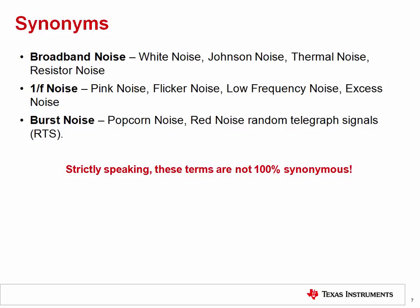As we have already seen, the various categories of noise have many synonyms. For example, broadband noise is also called white noise, Johnson noise, thermal noise, and resistor noise. It can become very confusing to engineers that are new to this subject when literature and presentations switch between these different terms.